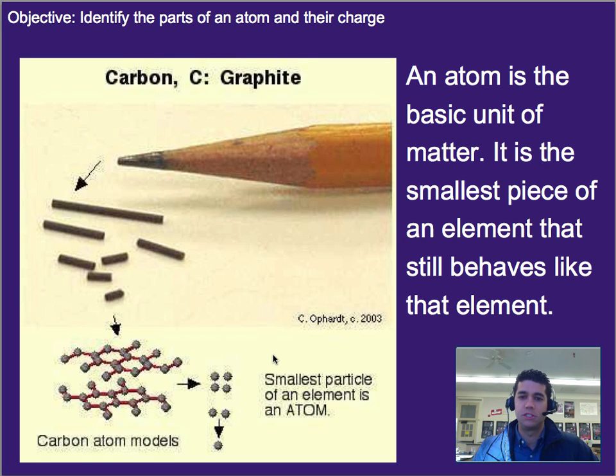So atoms are the smallest particles of any element. Now, some things are made up of multiple elements, but in this case we're looking at something that is a single element, and an atom is the smallest piece of that element that still retains its properties.